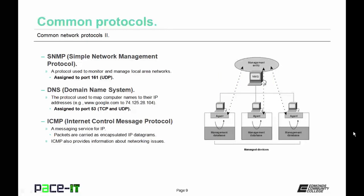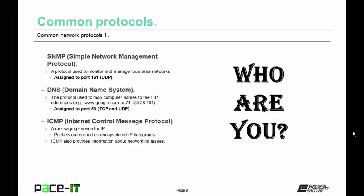Let's move on to SNMP, Simple Network Management Protocol. It's a protocol that's used to monitor and manage local area networks. It's assigned to port 161 and uses UDP by default.